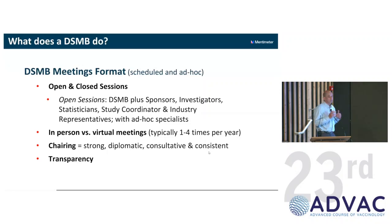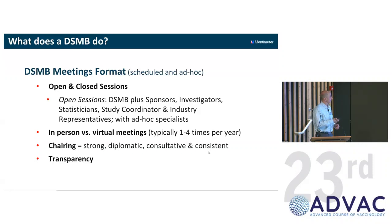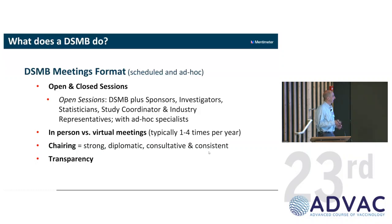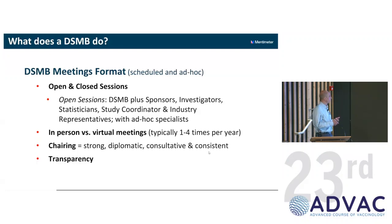The format for a DSMB typically involves regular meetings, but ad hoc meetings may be needed when particular circumstances occur. Meetings consist of open sessions and closed sessions. I prefer an open session followed by a closed session, though some DSMBs do initial closed, then open, then closed again. The open sessions include investigators, sponsors, coordinators, other representatives, and sometimes ad hoc domain specialists. Closed sessions consist purely of the DSMB members and the unblinded statistician. Virtual meetings are very enabling as they allow individuals to participate from across the world and facilitate ad hoc meetings, typically occurring between one and four times a year depending on trial size and complexity.